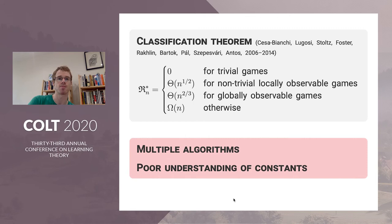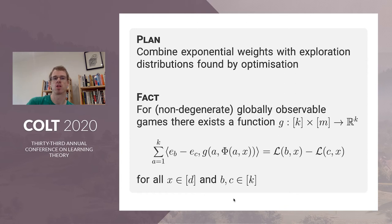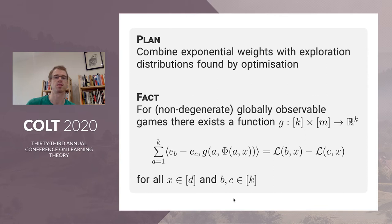The plan is really simple: we want to combine exponential weights — this well-known tool which we love — and add some exploration in a clever way. Exponential weights by itself isn't good enough, but if we're careful we can fix it. We're going to use the fact that for globally observable games there is some function you can use to estimate loss differences. If you played all actions essentially, you could estimate the difference between the losses of actions b and c — you can't always estimate losses themselves but you can estimate differences, which is what's important for sublinear regret.